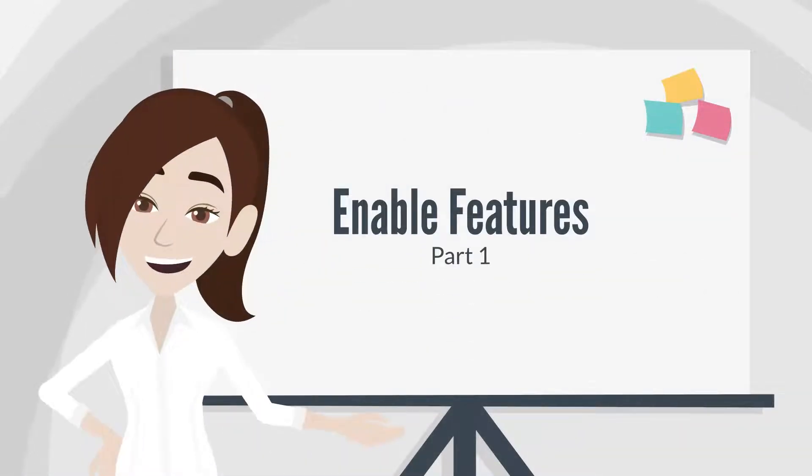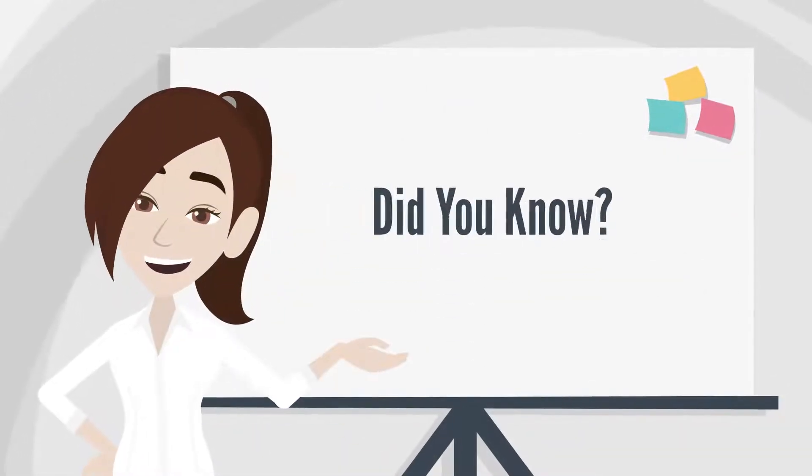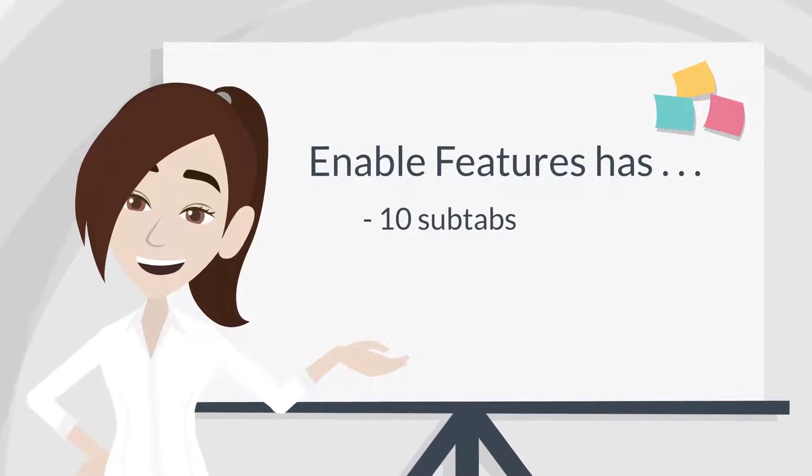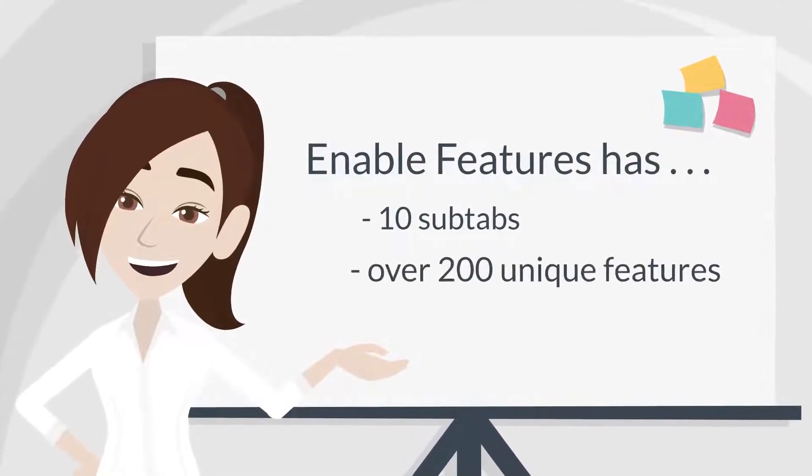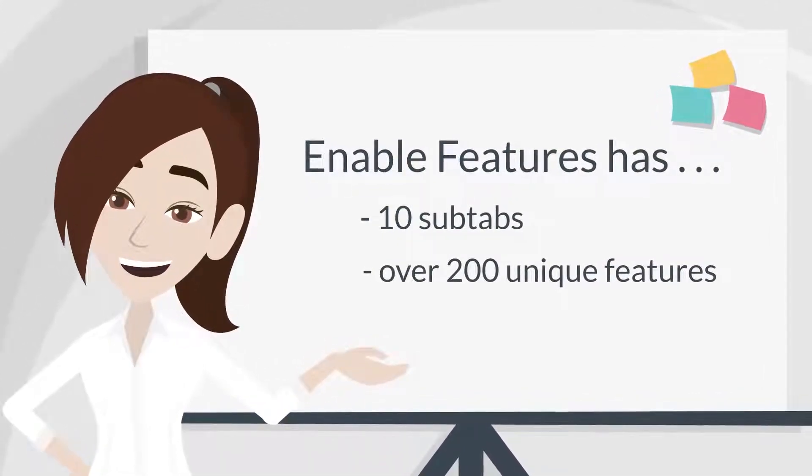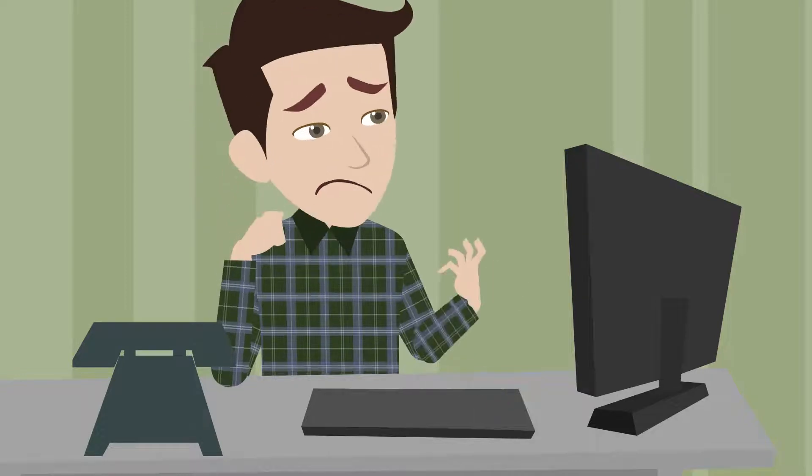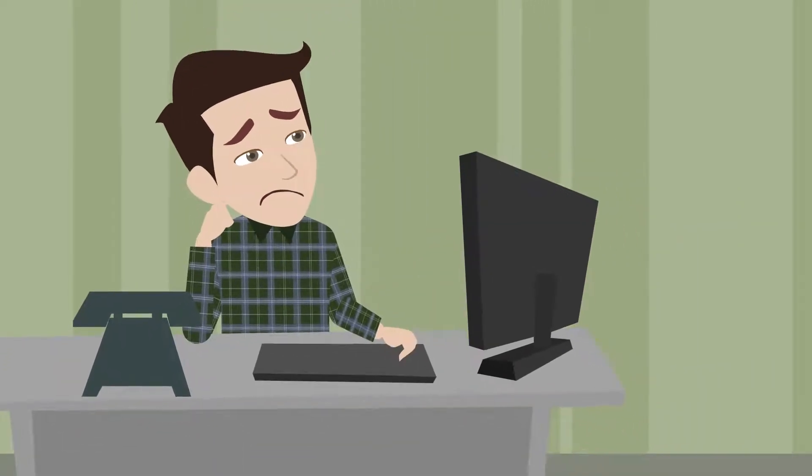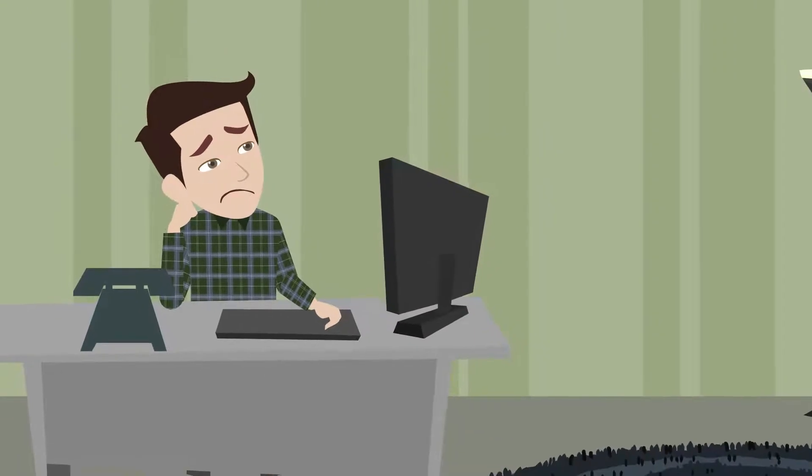Let's take a look at the Enable Features page in NetSuite. Did you know that there are 10 subtabs under Enable Features? These subtabs include over 200 unique features. Covering all these features would make for a tedious video, so instead, we'll highlight some of the key features in each of the first five subtabs.